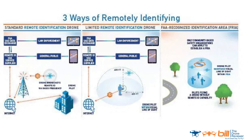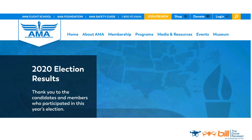The next slide is a diagram of the rule. The first shows the standard remote identification drone, with communication taking place between the drone pilot, the drone itself, and the Remote ID USS with the government. That information would be available to the general public and to law enforcement. The limited remote identification shows a limit of 400 feet in height and 400 feet in distance, and it has to be within visual line of sight. The last is the FAA-recognized identification area, which is a community-based organization — the greatest example being the Academy of Model Aeronautics.